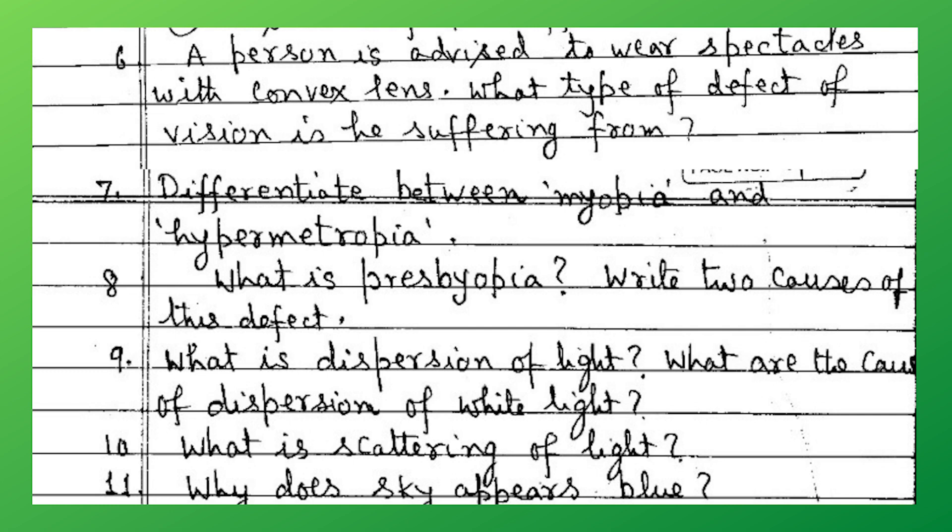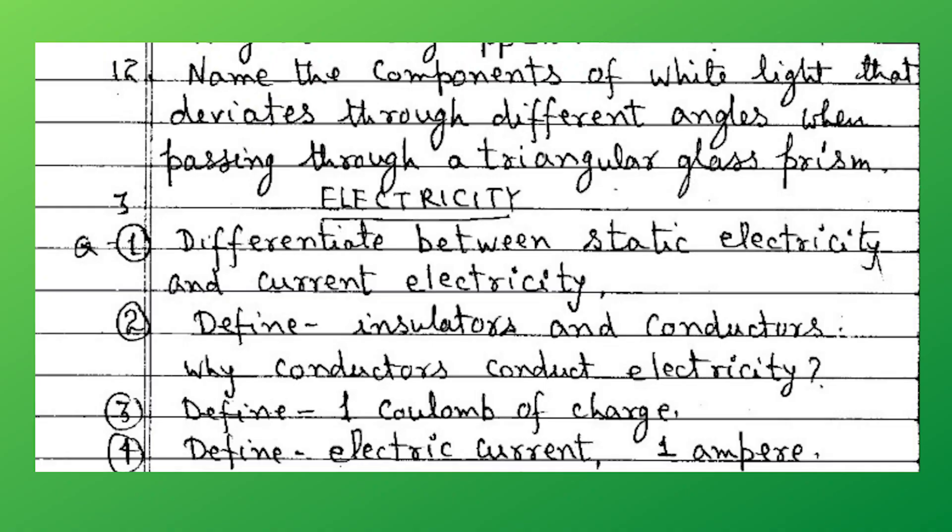What is dispersion of light? What are the causes of dispersion of white light? What is scattering of light? Why does the sky appear blue? Name the components of white light that deviate through different angles when passing through a triangular glass prism.